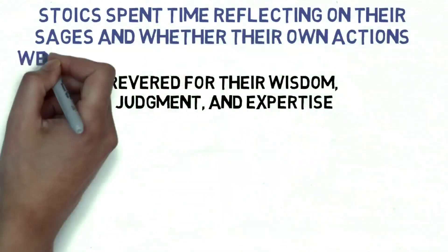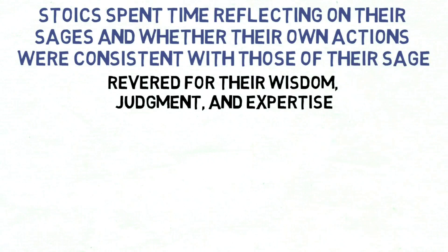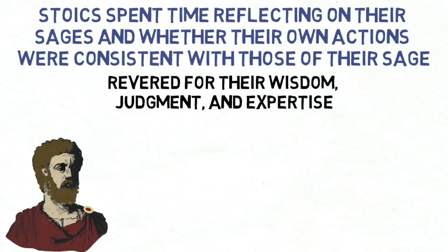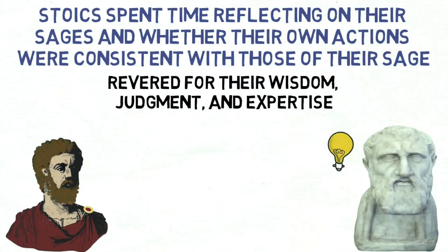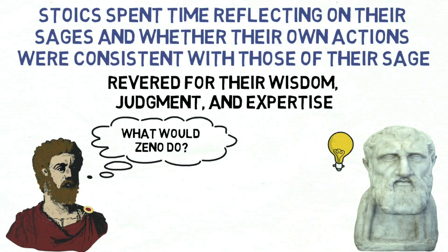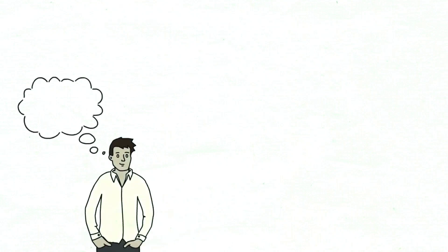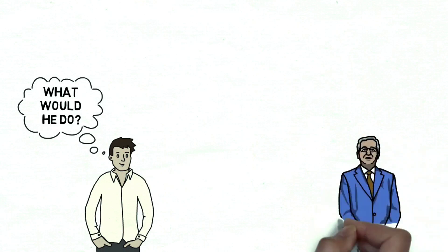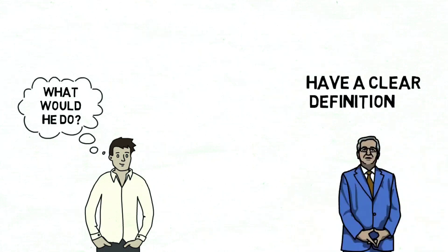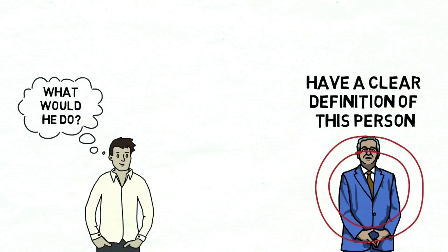Stoics spent time reflecting on their sages and whether their own actions were consistent with those of their sage. Marcus Aurelius considered the sage to be someone full of wisdom and knowledge. His sage was Zeno, the founder of Stoic philosophy and he would often ask himself, what would Zeno do? Contemplation of the sage should essentially be a period of time in the evening where you reflect on your day or the person you are and ask yourself, what would your role model do? Your role model could be someone you know or maybe just a concept of an ideal person. It is important to have a clear definition of this person so that you reflect on whether your actions are in line with your role model.